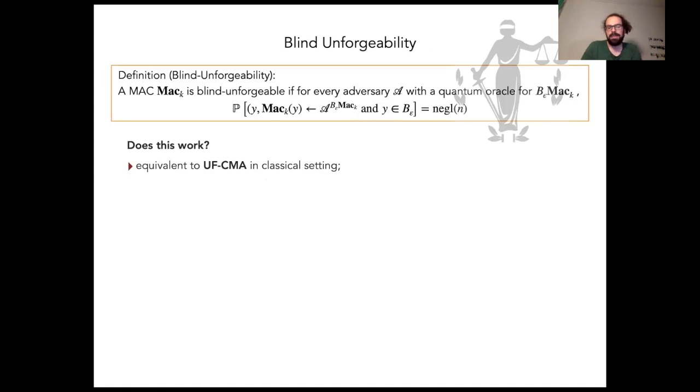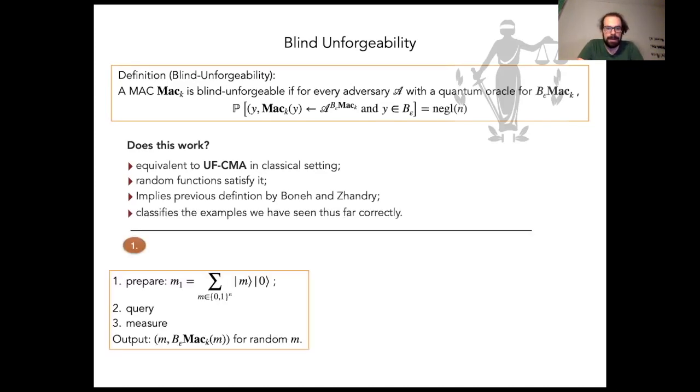First of all, we can prove that it's equivalent to UFCMA if we restrict to a classical oracle. That's reassuring. Also, we can prove that a random oracle is blind unforgeable. We also prove that it implies the previous definition, which builds additional confidence. And finally, it classifies all the examples that we know correctly.